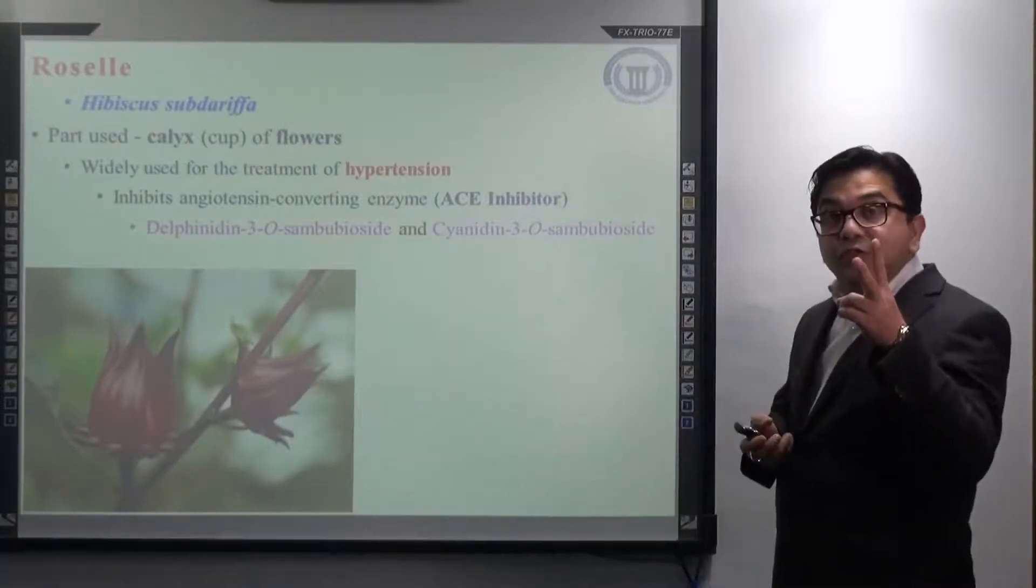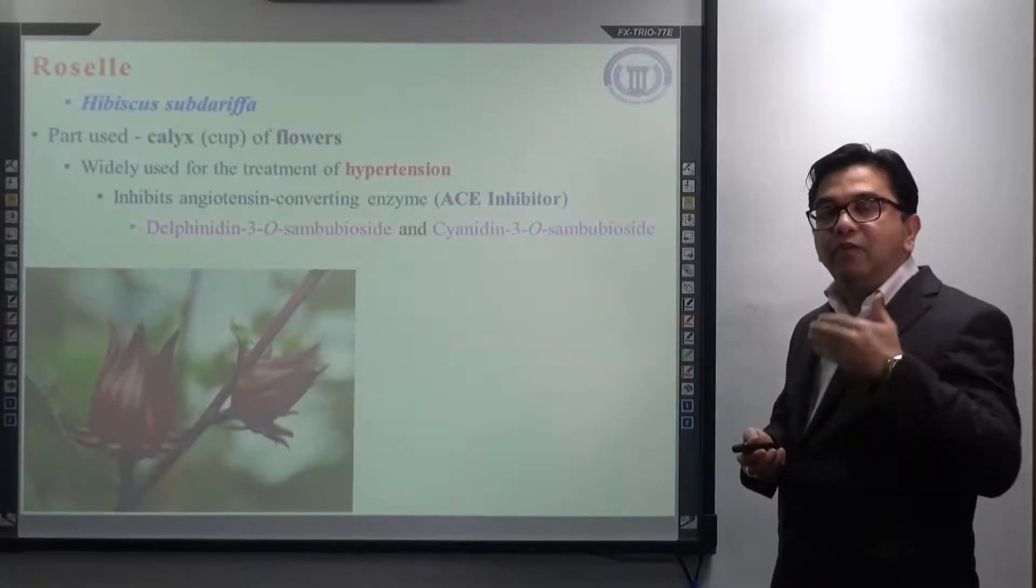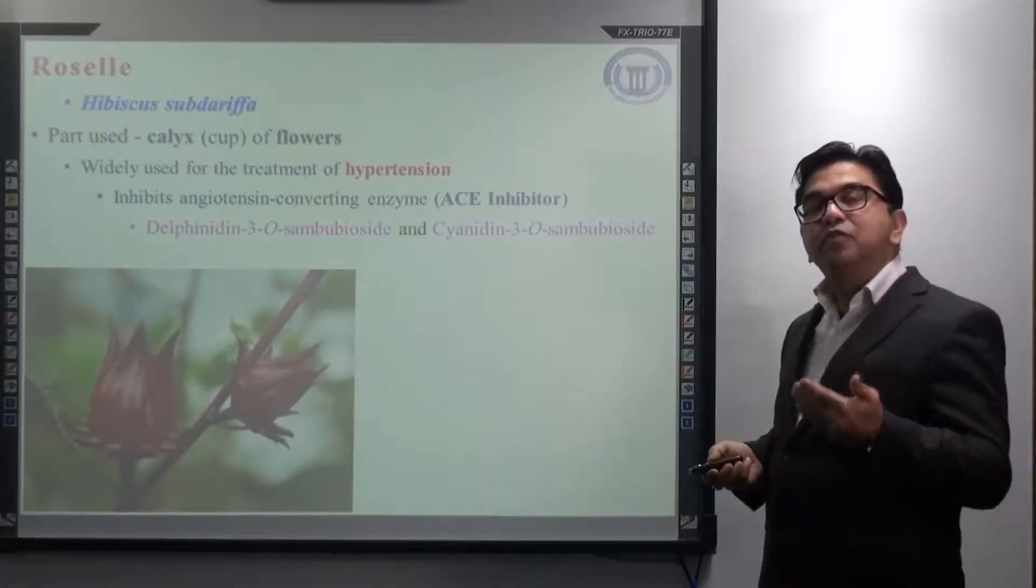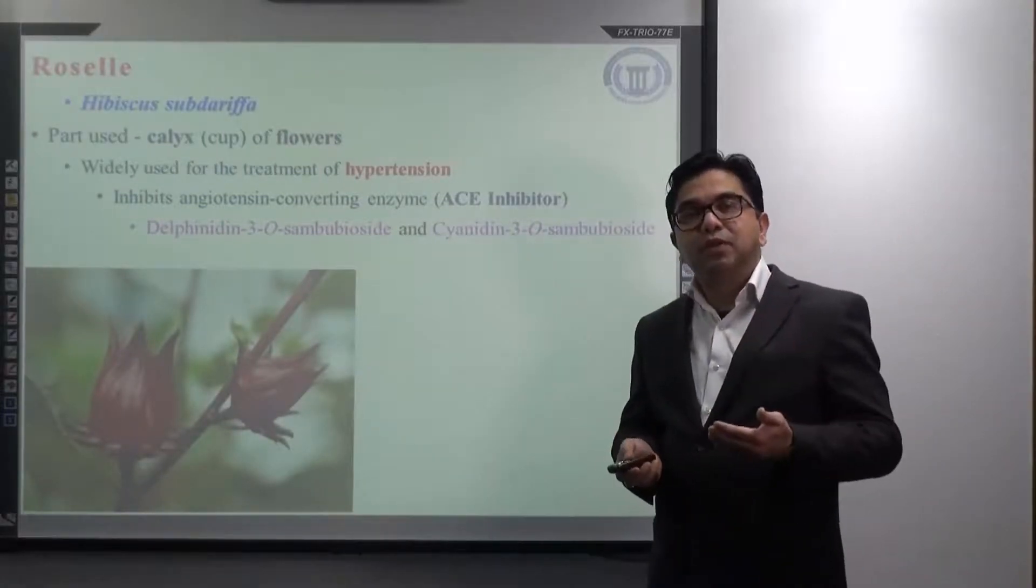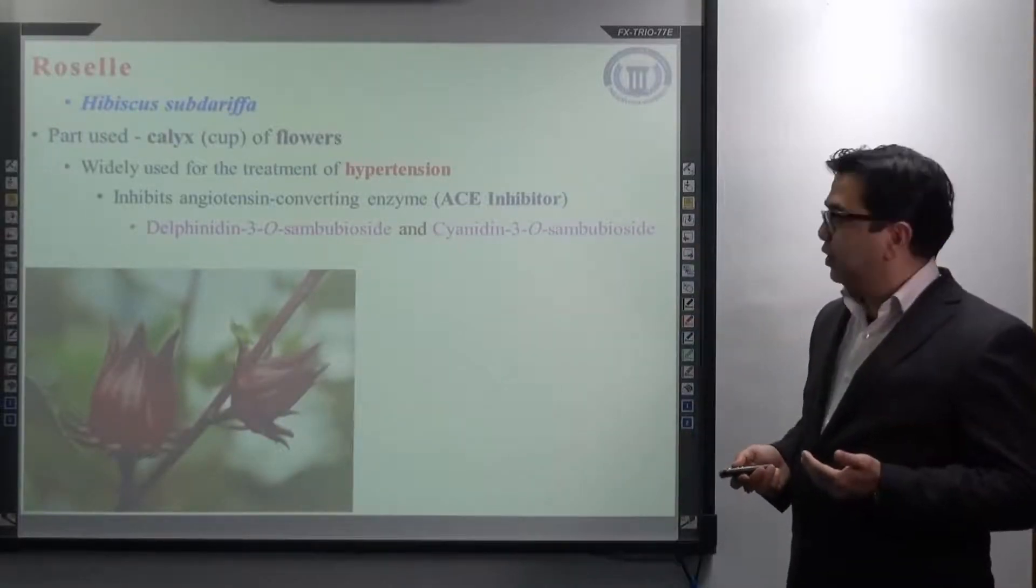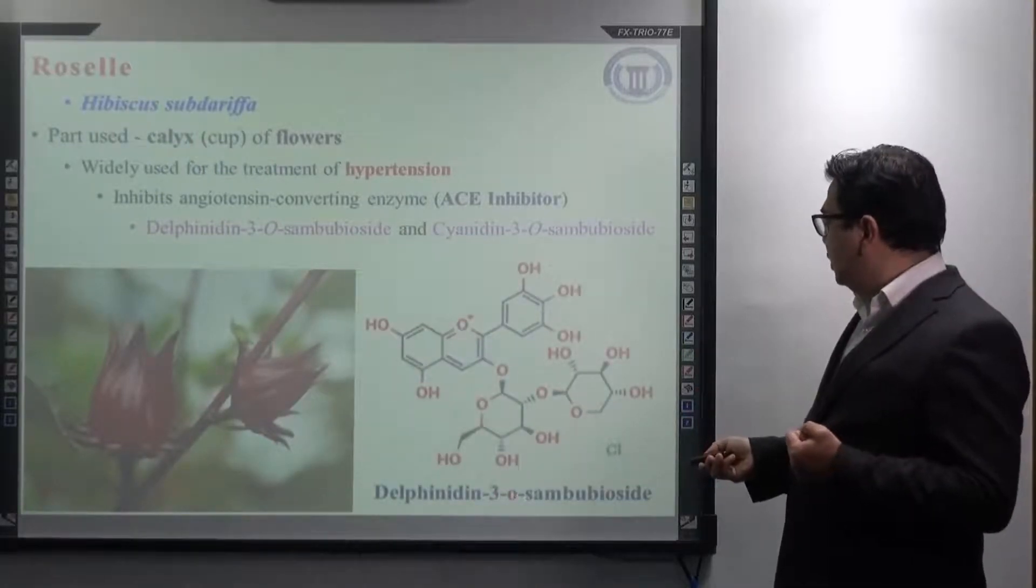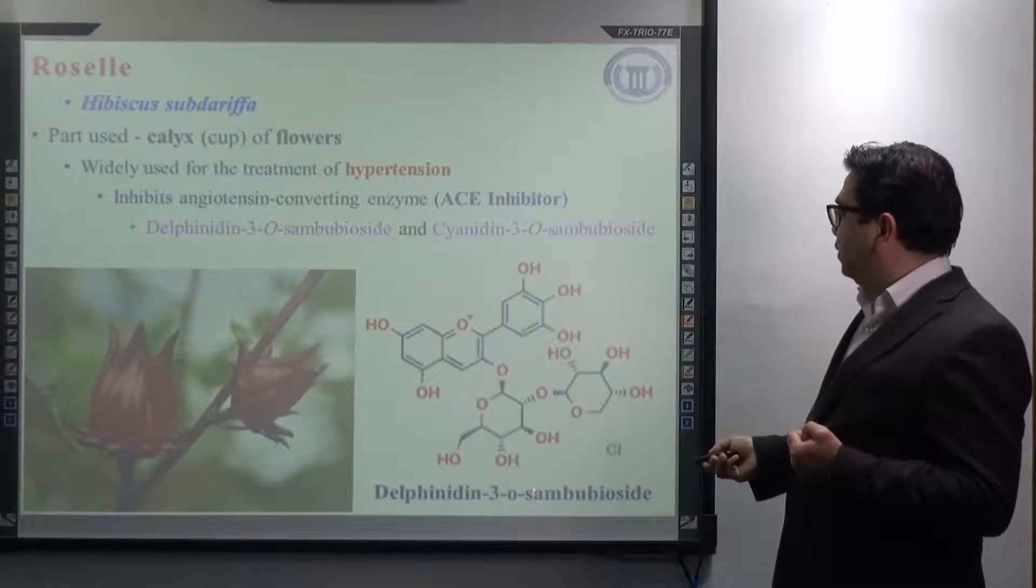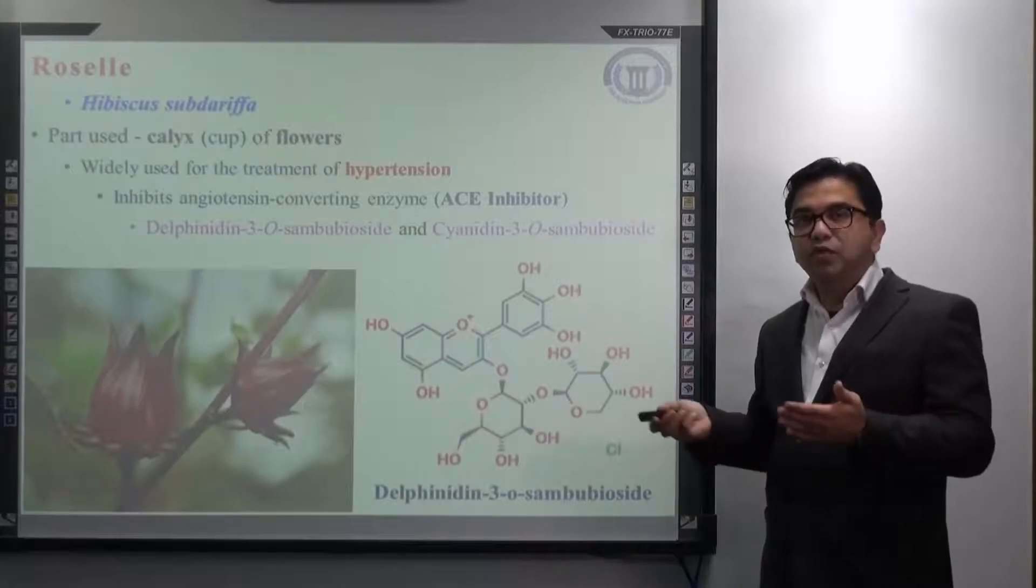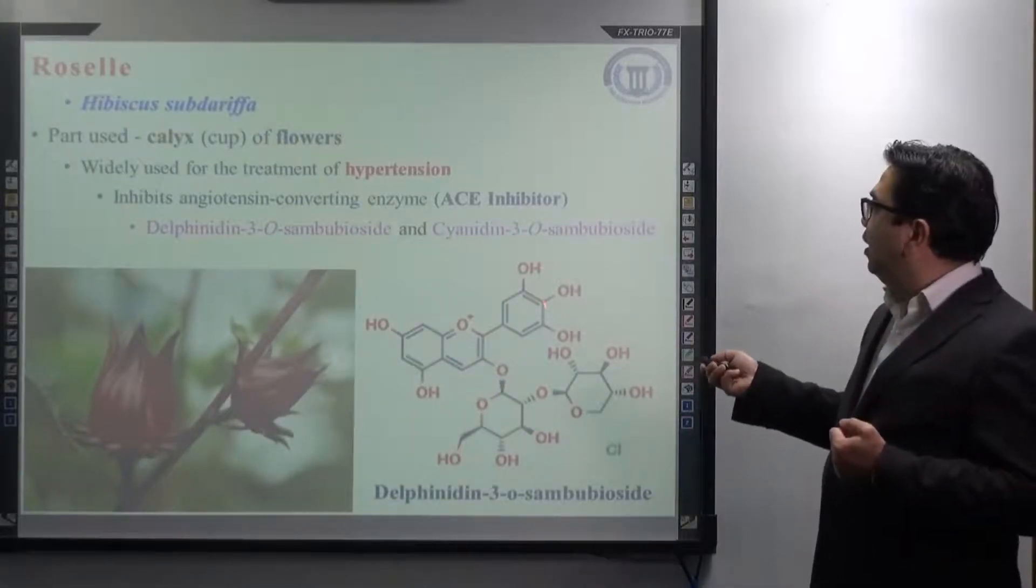I repeat, anthocyanins, not anthocyanidin. It is the glycoside form of delphinidin and glycoside form of cyanidin is found to be responsible for the inhibition of ACE and hence responsible for the treatment of hypertension. Here is the structure of delphinidin 3-O-sambubioside. The structure of cyanidin 3-O-sambubioside I have not given. It is almost similar. Only thing is here, instead of delphinidin, you will have cyanidin.